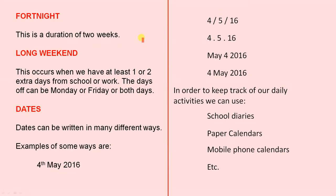A fortnight is a duration of two weeks — duration means that's how long it lasts, so a fortnight lasts for two weeks. A long weekend occurs when we have at least one or two extra days off from school or work. The days off can be Monday or Friday or both days. For example, a long weekend can be Friday, Saturday and Sunday.